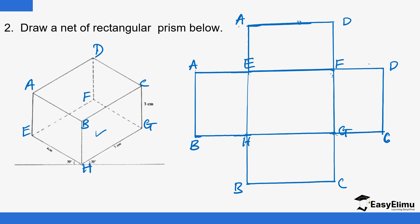Now on this other end I'm going to draw the top. The top is five centimetres by four, so I draw five centimetres by four. So that is the top part, and the top part must also be labelled A, B, C and D. You can see how I've labelled it — the top part and the bottom. So when you fold them, that is what you're going to form. That is how you do the sketch.